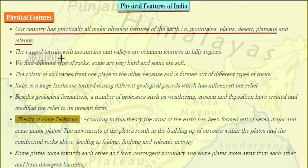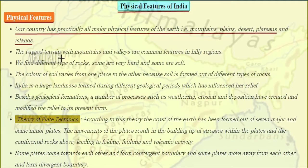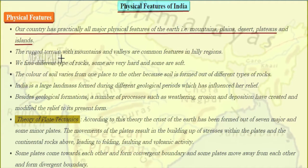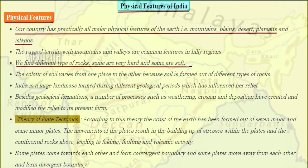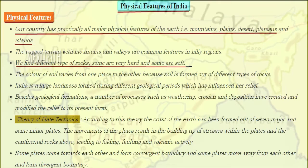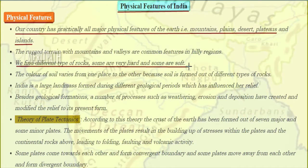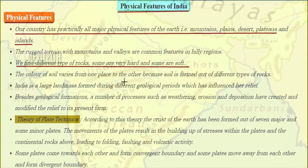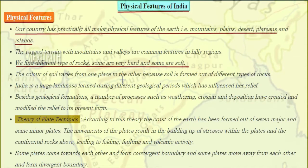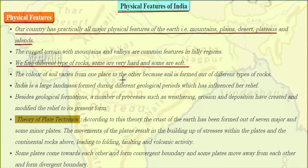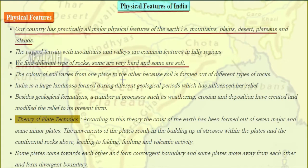The rugged terrain with mountains and valleys are common features in the hilly areas. We find different types of rocks — some are very hard, some are very soft. The color of the soil also varies from place to place because soil is formed of different types of rocks.